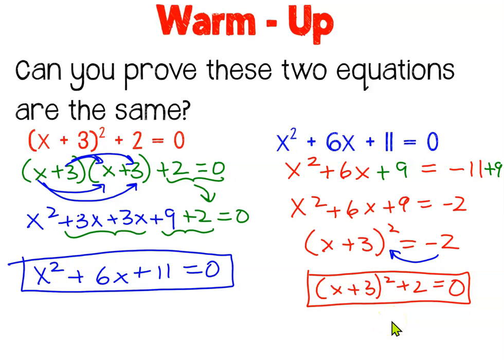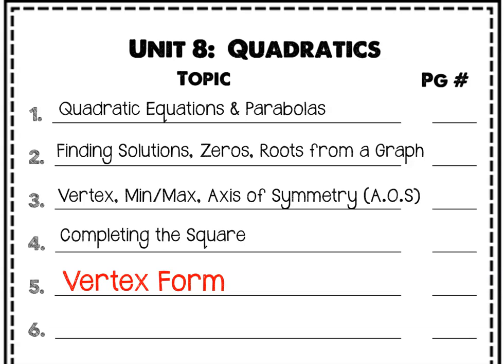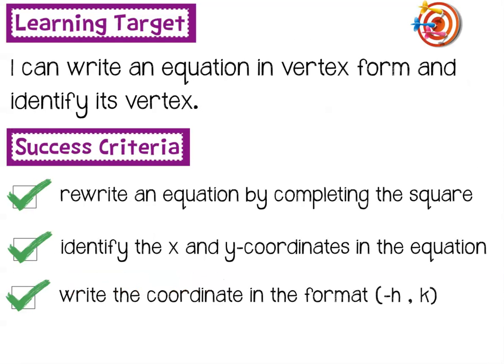So these are some of the techniques we've learned in previous lessons: factoring, foiling — or what I call double distributing — and completing the square. All of these tools help us rearrange an equation so that it looks the way we want it to look. Sometimes you want it to look like the red form, and sometimes you want it to look like the blue form. By the end of the lesson today, you should be able to say: I can write an equation in vertex form and identify its vertex.